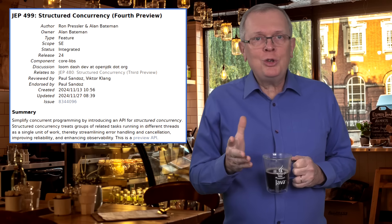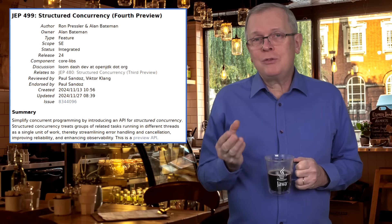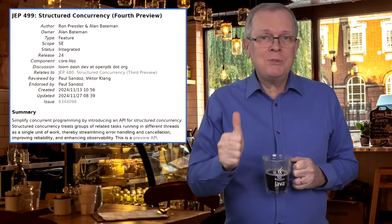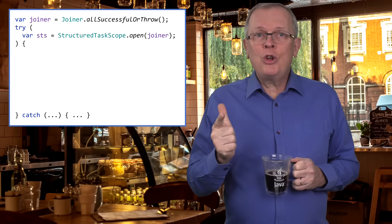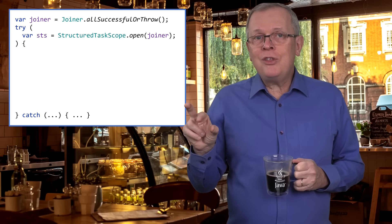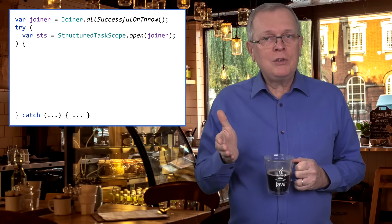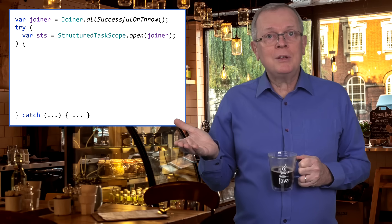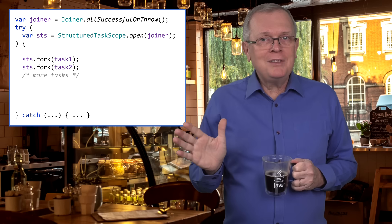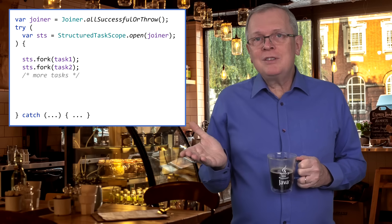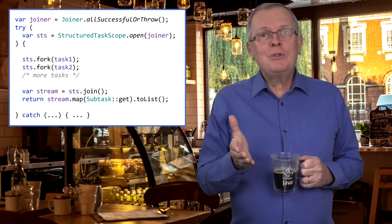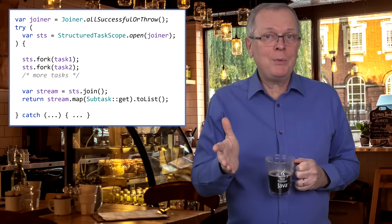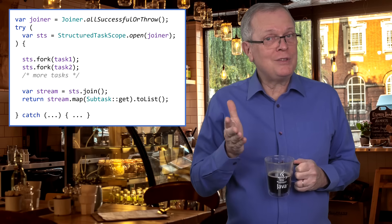In this early access version, you can create instances of the StructuredTaskScope class using an off-factory method that can take a joiner object as a parameter, or a config object to configure the virtual threads this StructuredTaskScope can create. You can use different implementations of the joiner interface the API gives you, or implement your own. Among other things, the scope object can give the results of submitted tasks in a stream, and you can produce your final result from that stream or interrupt it if you're happy with what you already have.